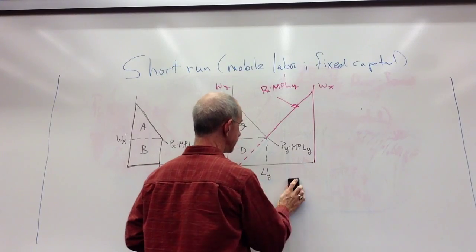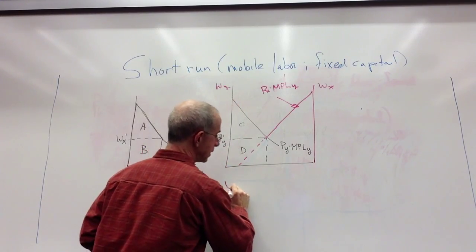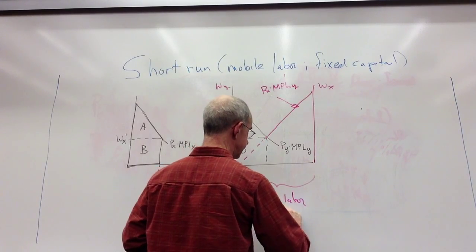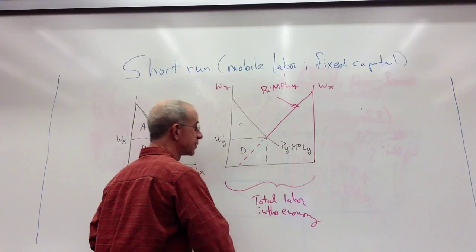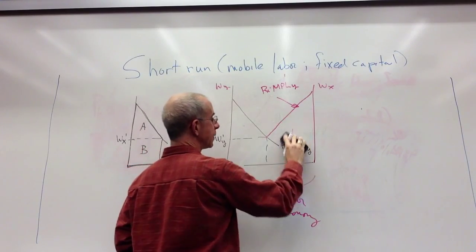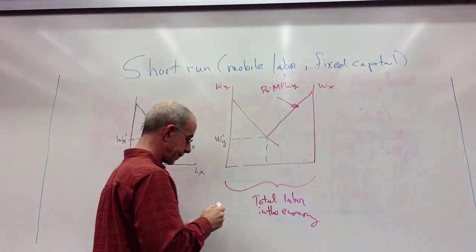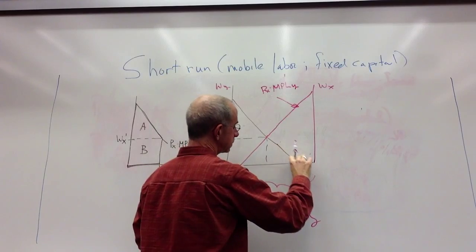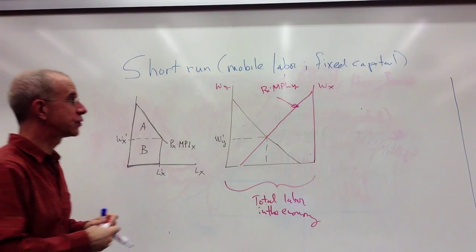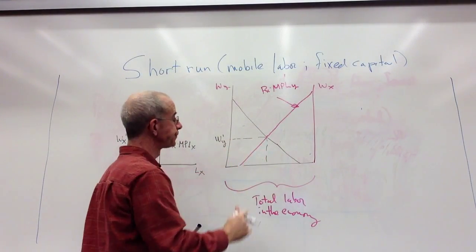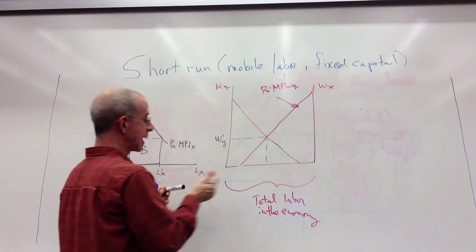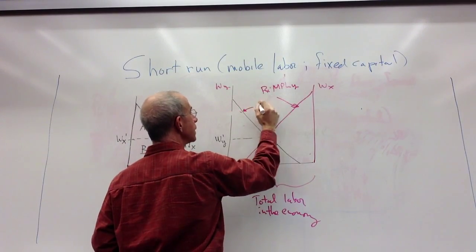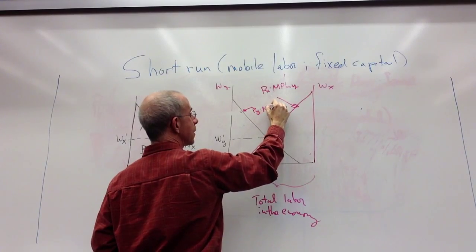So what we have is the horizontal axis is the total labor in the economy, and that is split. Let me erase some of this stuff so it's a little bit easier to see. So we've got these two demand curves for labor, done exactly as before. So that's the price of Y multiplied times the marginal productivity of labor in Y.